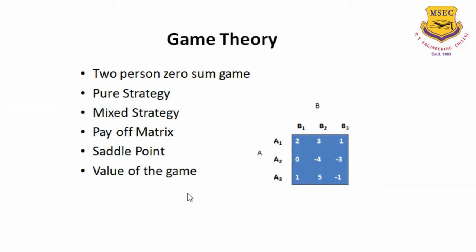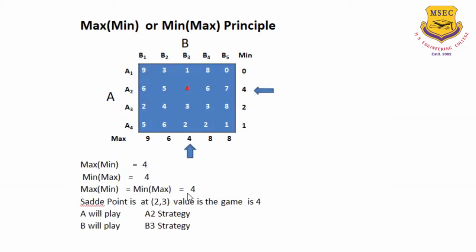We will also discuss the saddle point and the value of the game. Now let's look at what the saddle point is all about. We will consider a problem in which A has got 4 strategies and B has got 5 strategies. A is going to play strategies A1, A2, A3, A4 such that he tries to play to minimize the payoffs he is going to get. If A is playing the A1 strategy, out of 9, 3, 1, 8, 0, the minimum is 0, corresponding to B playing strategy B5. Therefore the minimum that A is going to have is 0.